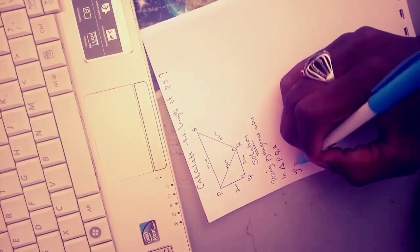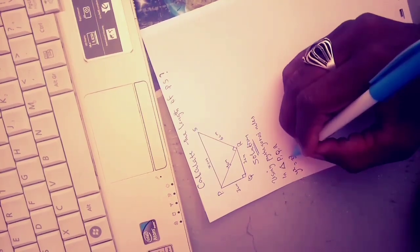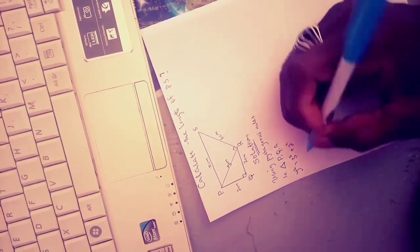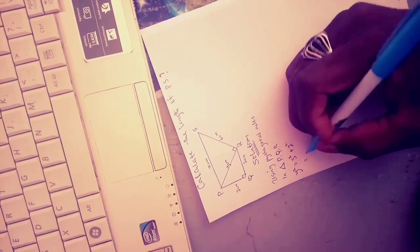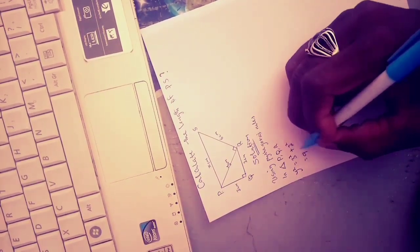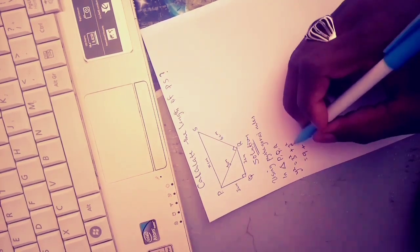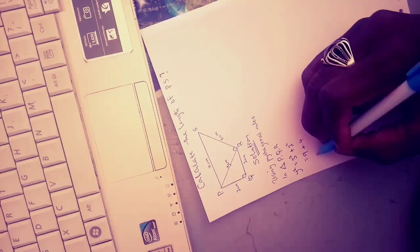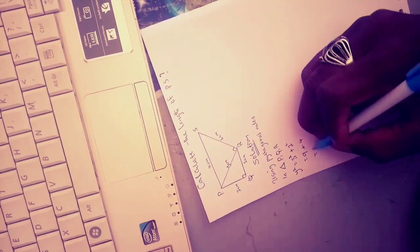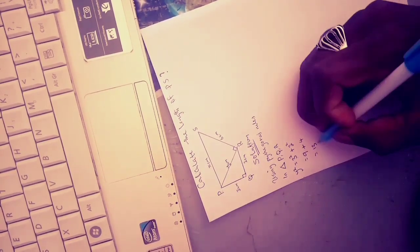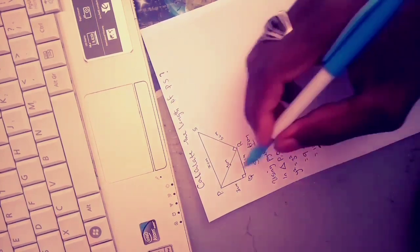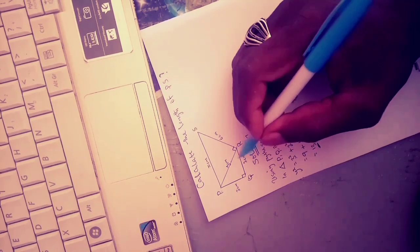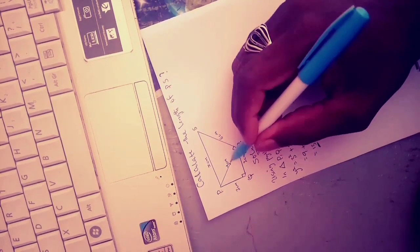y squared equals to 3 squared plus 2 squared, which equals to 3 squared which is 9, plus 2 squared which is 4. So we have 9 plus 4 equals to 13. So our y equals to √13. So we got our answer for y centimeter.